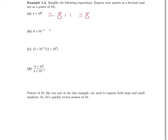Let's look at part B: 9 times 10 to the negative 2. By the property above, 10 to the negative 2 is 1 over 10 squared. 10 squared equals 100, so this fraction is 1 one-hundredth. The result when we multiply is 9 one-hundredths, which we can write as the decimal 0.09.